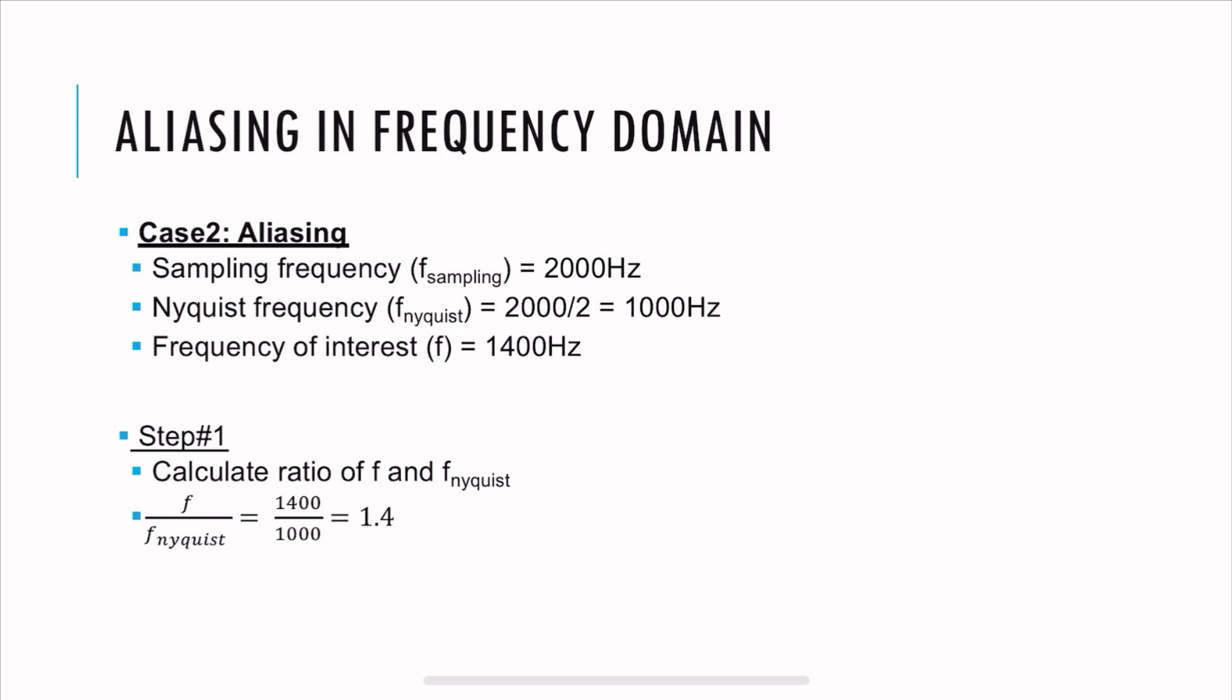The next case is there is going to be aliasing here. So in order to create aliasing, we need to break the Nyquist theorem. So we have the sampling frequency of 2000, the Nyquist frequency is 1000 hertz. And we are intending to capture a frequency of 1400 hertz above the Nyquist frequency. So it's a perfect recipe for aliasing.